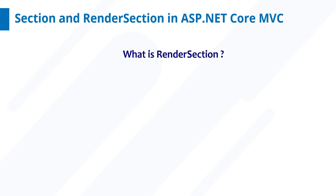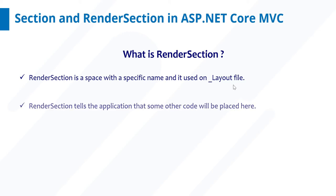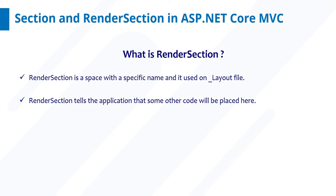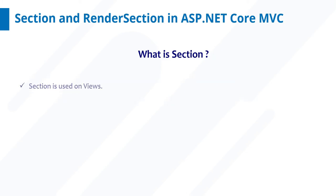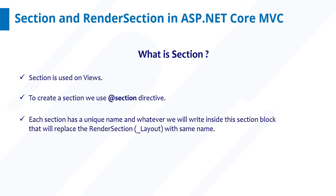Let's first understand what render section is. Render section is a space with a specific name and it is used on the layout file. Render section tells the application that some other code will be placed here. Section is used on the views — render section is used on the layout page whereas section is used on our views. To create a section we use the @section directive, and to create a render section we use the @RenderSection directive. Each section has a unique name, and whatever we write inside this section will replace the render section in the layout with the same name.